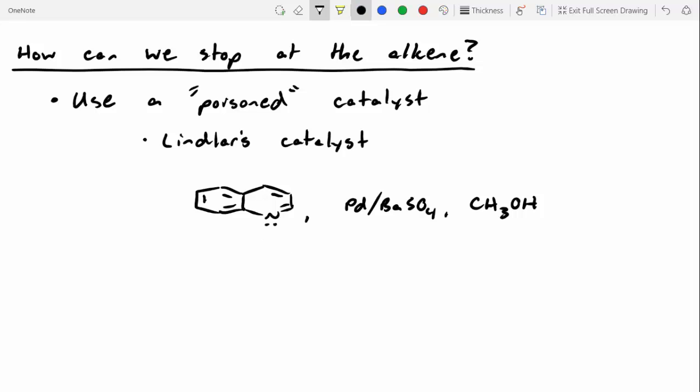We're not going to go into the mechanistic details behind Lindlar's catalyst, but I do want you to know the name of it. The other one that's often used is called a P2 catalyst. And this is a nickel-boron complex with two nickels and one boron. Yeah, it's P-2. And these are really nice poison catalysts. The unique thing with these poison catalysts is that these will only give you one alkene. So I'll show you what I mean by that.